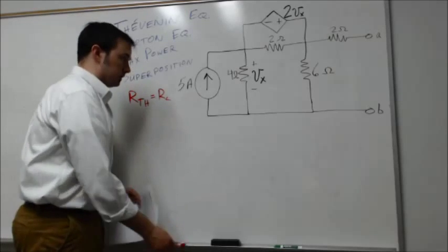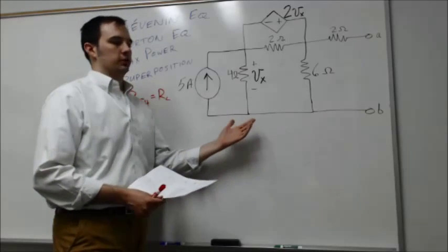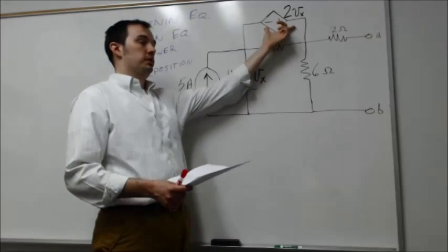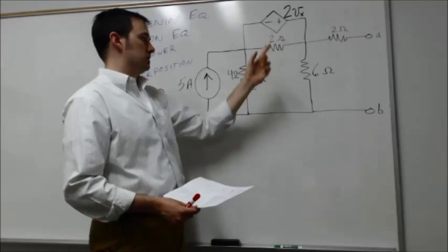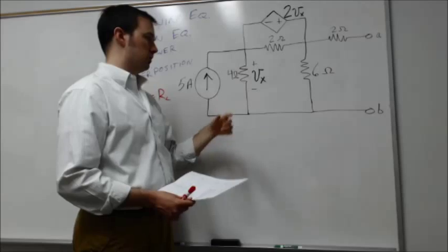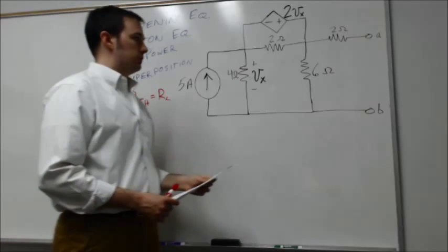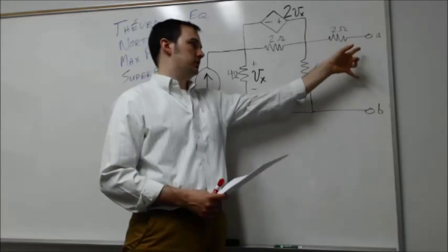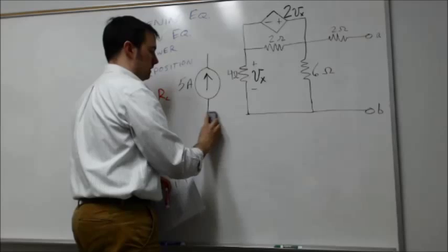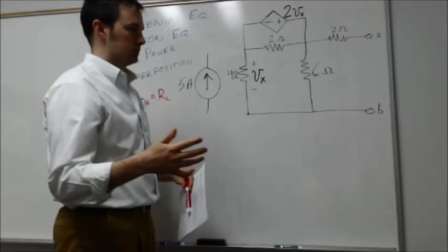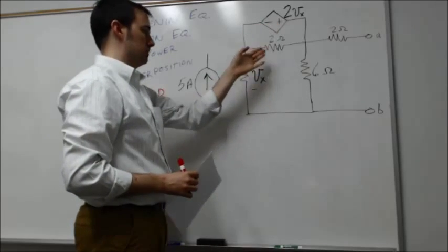Let's go through an example for finding the Thevenin equivalent resistance. The difference in this example compared to what we did in class is that we now have a dependent source — a voltage-dependent voltage source equal to two times V sub x, where V sub x is the voltage drop across the four-ohm resistor. We also have an independent current source. The first step is to deactivate independent sources: disconnect the current source, making it an open circuit. We keep the dependent source active since it depends on circuit quantities.